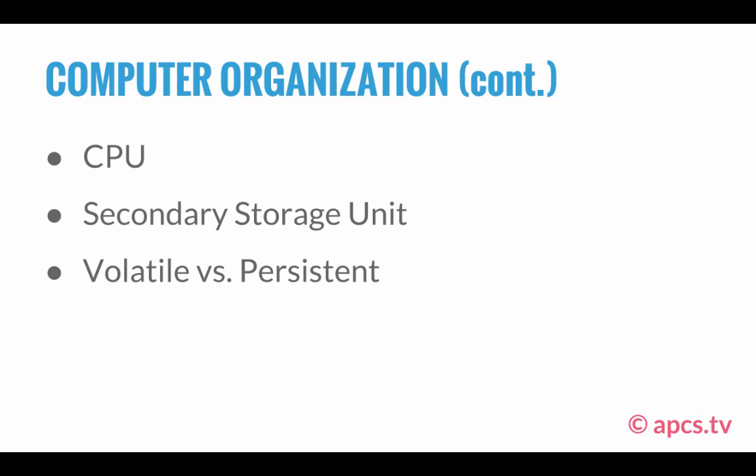This brings up a very important topic. Volatile versus persistent. They're the complete opposites of each other. Volatile information is information that isn't preserved after the computer is turned off. On the other hand, persistent information is information that lasts even after the computer's power is turned off. Volatile information is contained in the memory unit, and persistent information is contained in the secondary storage unit.